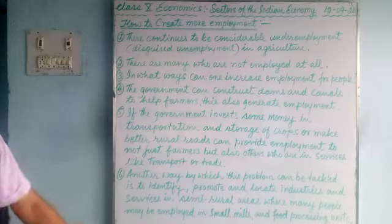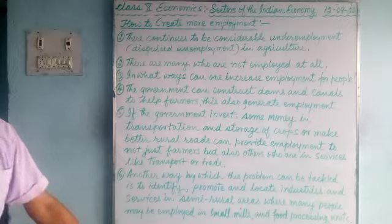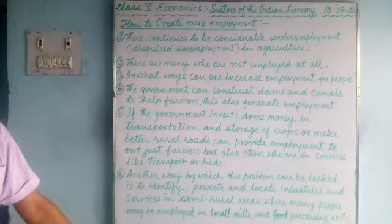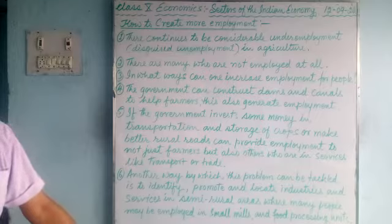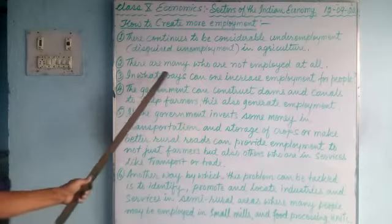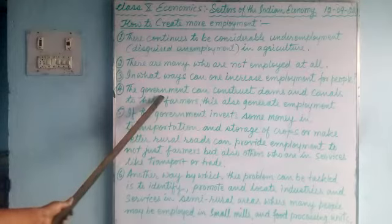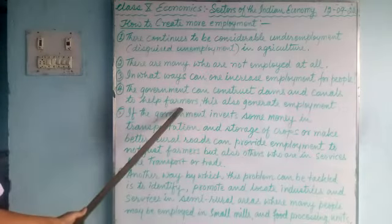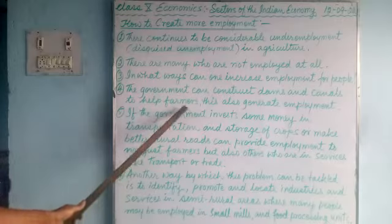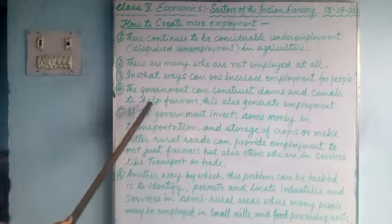So in what ways can employment be generated for the people, especially in rural areas? Near cities there are factories and industries, but in rural areas most people are underemployed. The government should step in — the government can construct dams and canals to help farmers, and at the same time people will get employment through the construction of these projects.